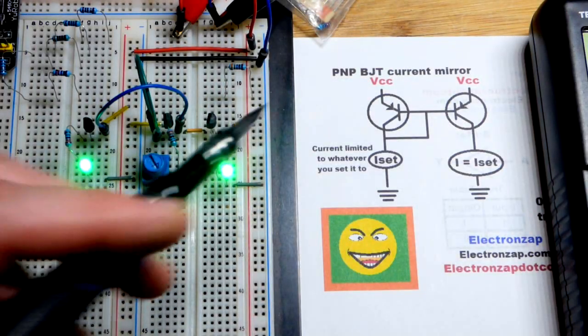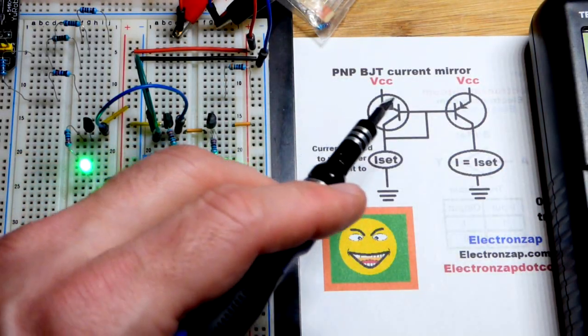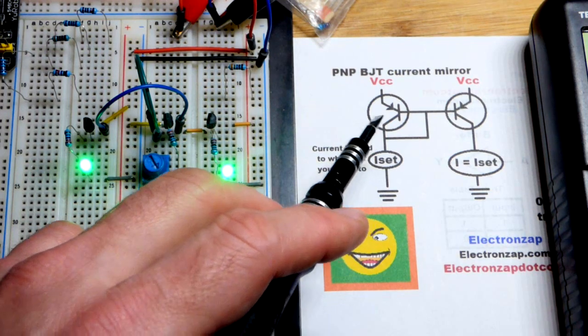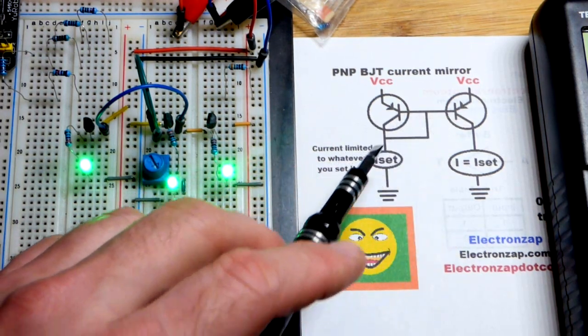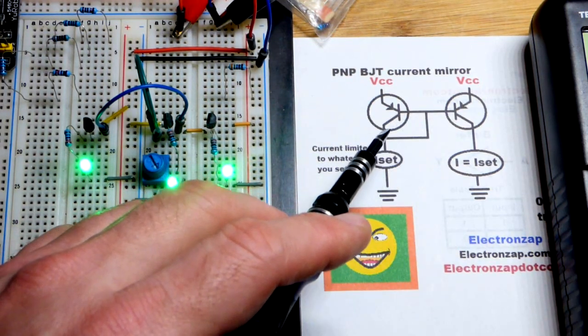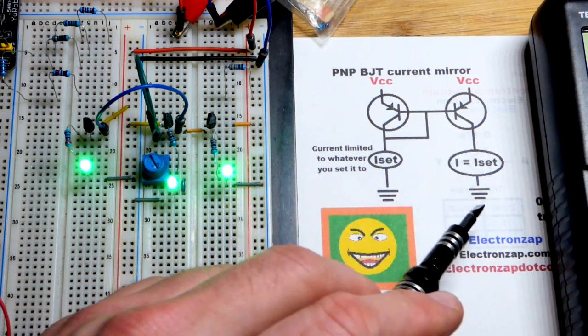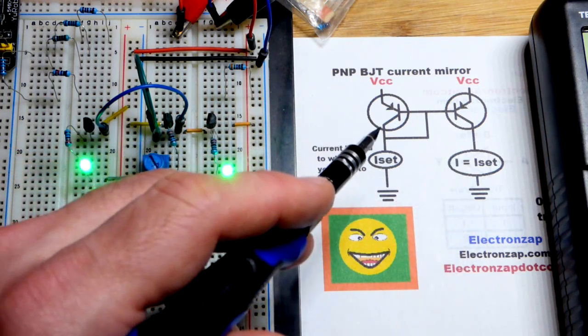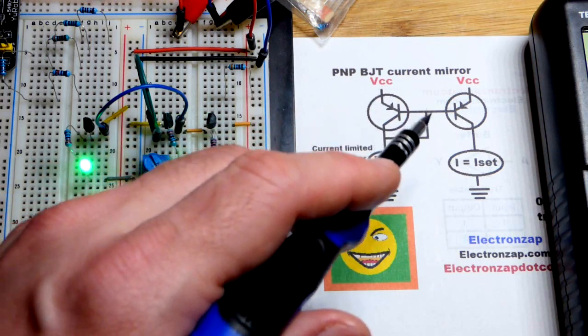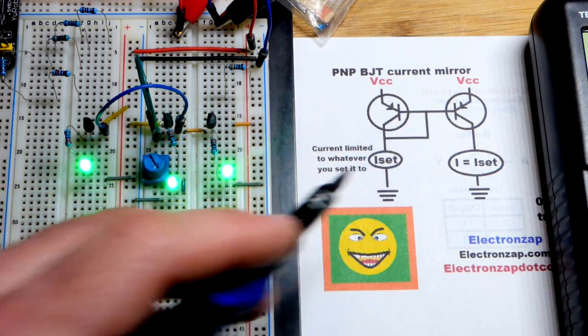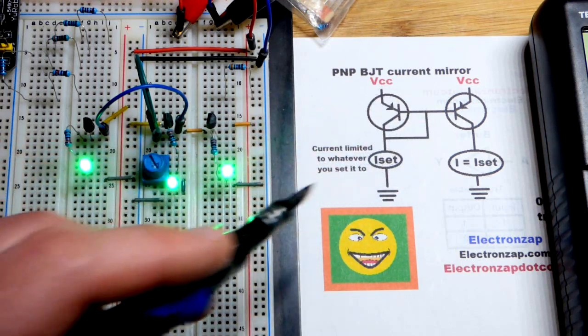In this video we're going to look at the current mirror made with bipolar junction transistors. The PNP bipolar junction transistor works really well because it becomes the source of current. We set the current with one of the bipolar junction transistors. As you can see, we'll look at this circuit in more detail coming up.